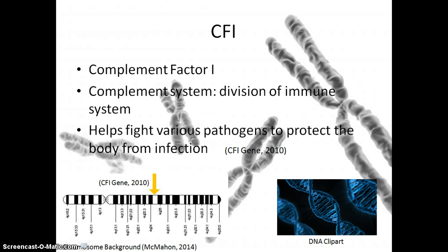Another gene found in chromosome 4 is CF1, or complement factor 1. In the complement system, which is a division of the immune system, this gene helps to fight various pathogens such as bacteria and viruses to protect the body from various infections.